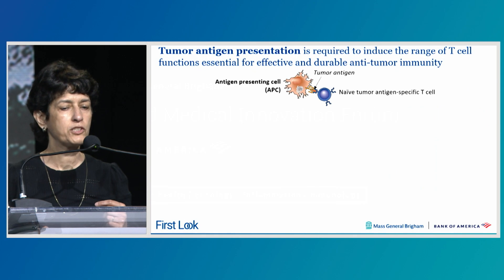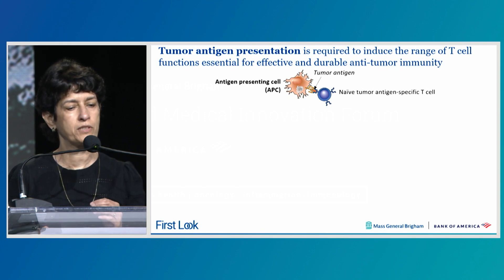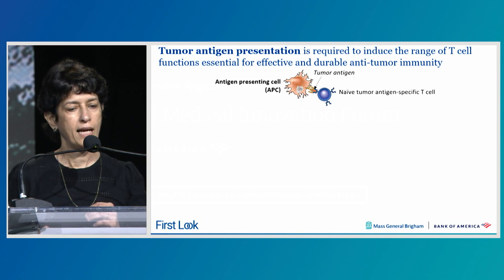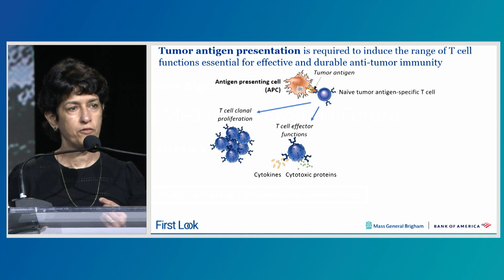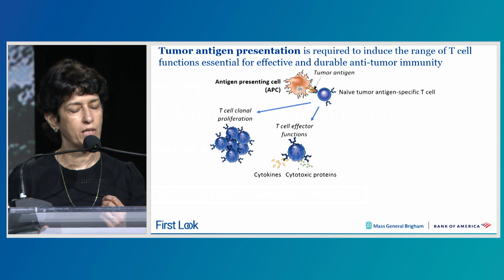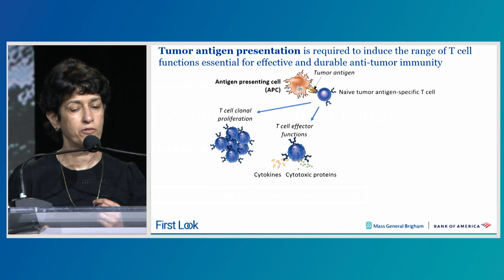Tumor antigen presentation is required to induce the range of T-cell functions essential for effective and durable anti-tumor immunity. Antigen-presenting cells, or APCs, pick up the tumor antigen at the site of the tumor and migrate to the draining lymph node, where they activate naive tumor antigen-specific T-cells. This activation initiates proliferation and acquisition of effector functions, such as cytokine generation and cytotoxic proteins like granzyme B or perforin, which directly kill tumors.